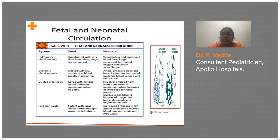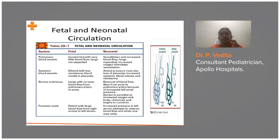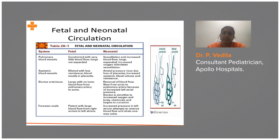The alveoli expand and fill with air — this is the most important thing. The pulmonary blood vessels, which are closed and have high pressures prior to delivery, experience a decrease in pulmonary pressure once the alveoli open. The second most important change is clamping of the umbilical cord.